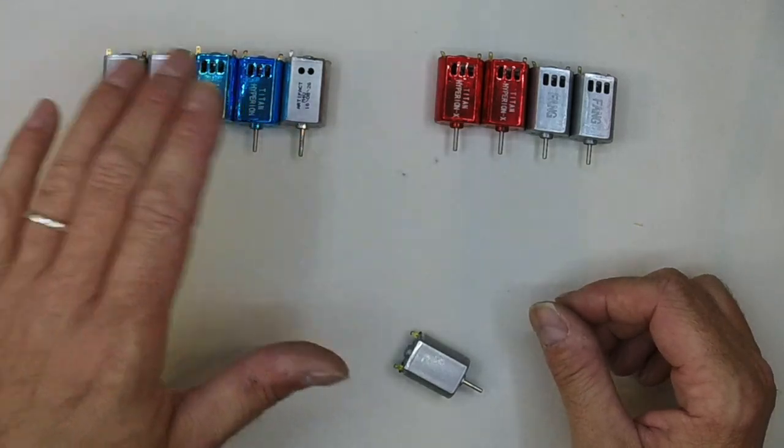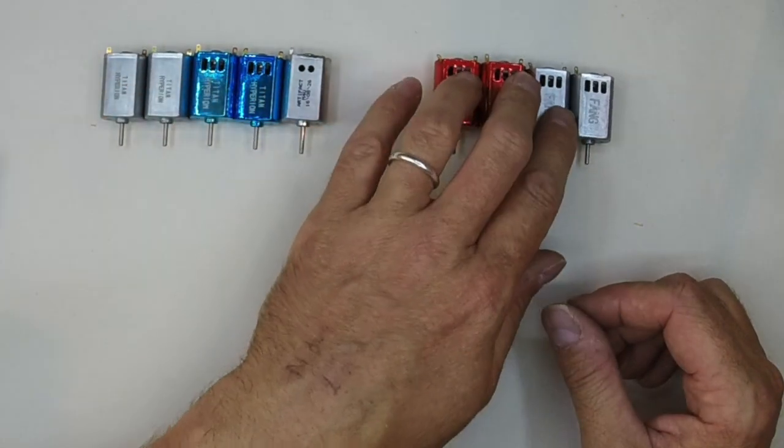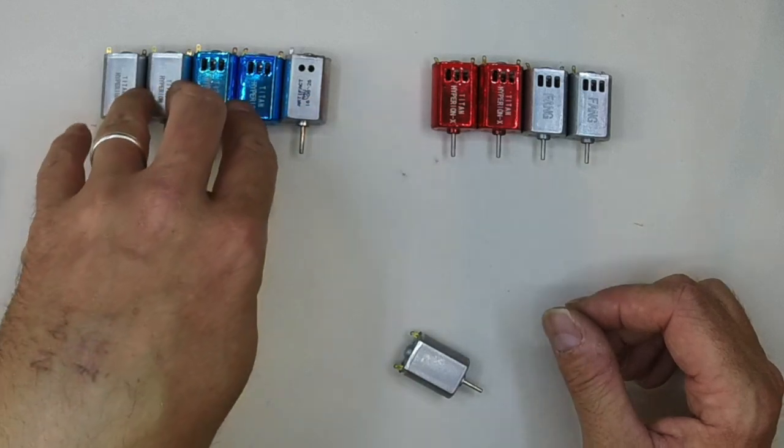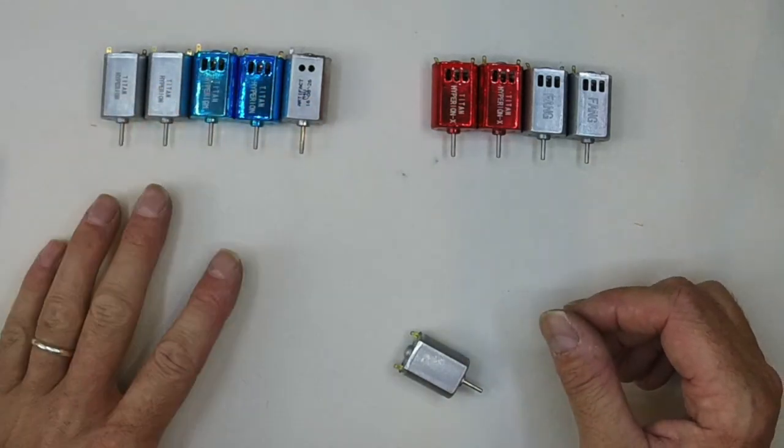There are advantages, but you must be aware that a 2S motor to produce the same power as an equivalent 3S motor will consume more current because the voltage is lower.